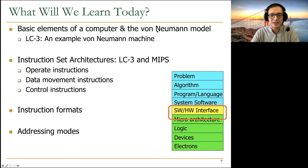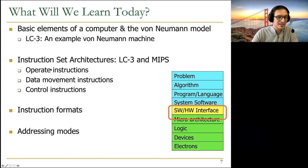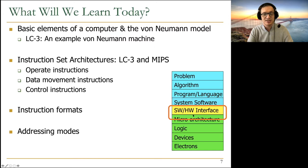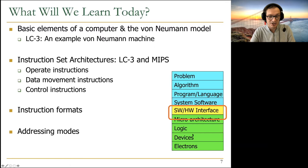Today we're going to talk about the basic elements of a computer and the von Neumann model, then jump into LC3 as an example of the von Neumann machine. We're going to talk about instruction set architectures for LC3 and MIPS, look at different types of instructions — operate instructions, data movement instructions, and control instructions — examine their formats and addressing modes. We're covering the hardware-software interface, which is the instruction set architecture: a contract between software and hardware specifying what the software expects the hardware will provide.